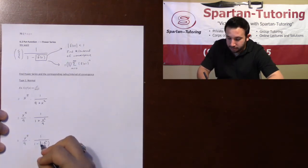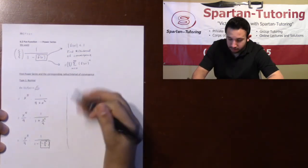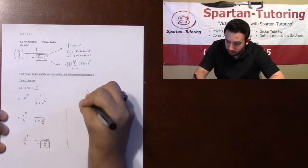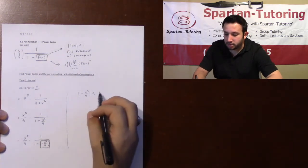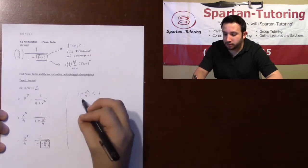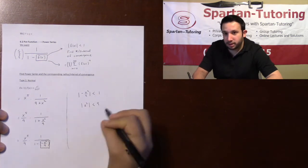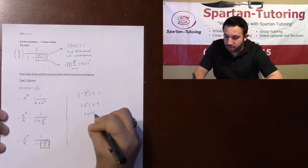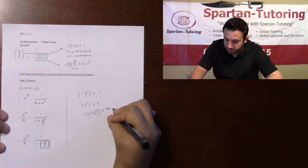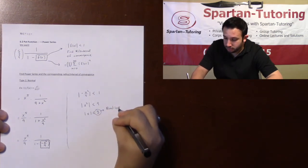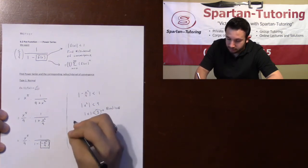At this point, I like to box the function negative x squared over nine, because we're going to do a couple of things with it. The first thing is to take the absolute value of negative x squared over nine and set it less than one. Since it's inside absolute values, the negative is irrelevant. Multiplying by nine gives absolute value of x squared less than nine. Taking the square root gives absolute value of x less than three, so the radius of convergence is three and the interval is negative three to three.